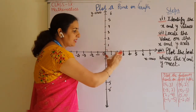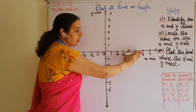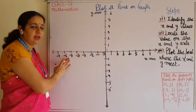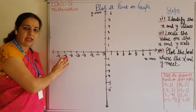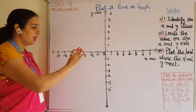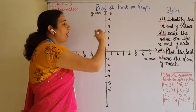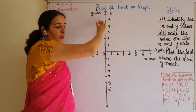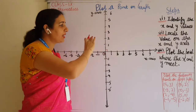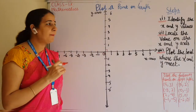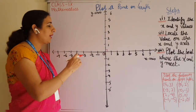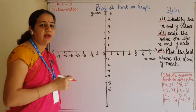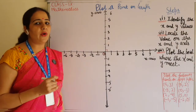On the x-axis, the right-hand side is the positive x-axis and the left-hand side represents the negative x-axis. On the y-axis, the points on the upward side represent the positive y-axis and the downward side represents the negative y-axis.